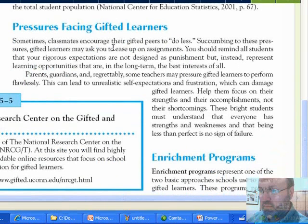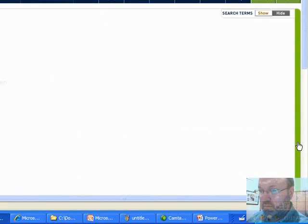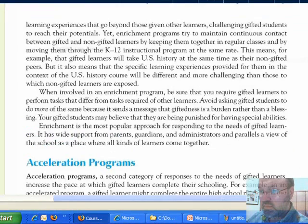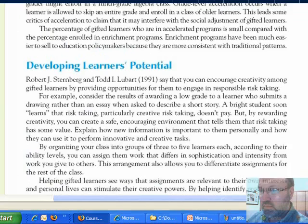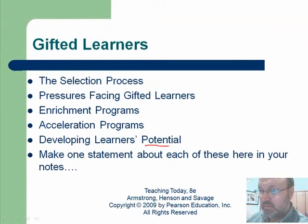Sometimes classmates encourage their gifted peers to do less — that pressure was significant. Gifted enrichment programs generally have one or two approaches: an enrichment approach or an acceleration program. Those were the two main approaches to gifted education, and ultimately it was about developing students to their full potential. If you'd make one statement about each of these things in your notes, that would be excellent.